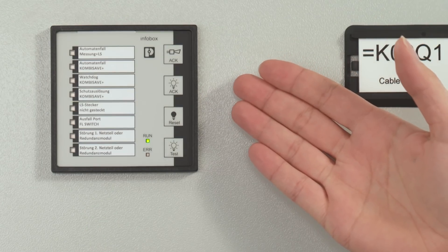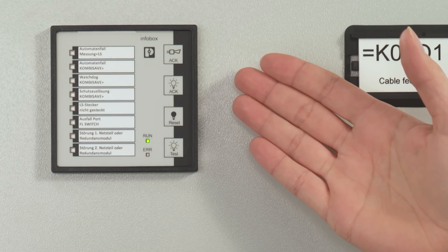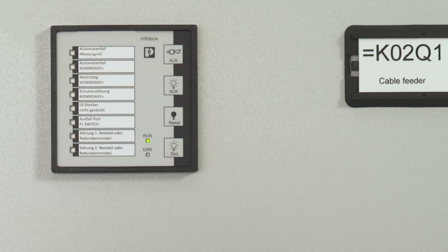The InfoBox is an electronic signaling device which is used to display and process alarms and messages. As an option, the alarms can be forwarded to a network control center via communication protocols such as IEC 61850.